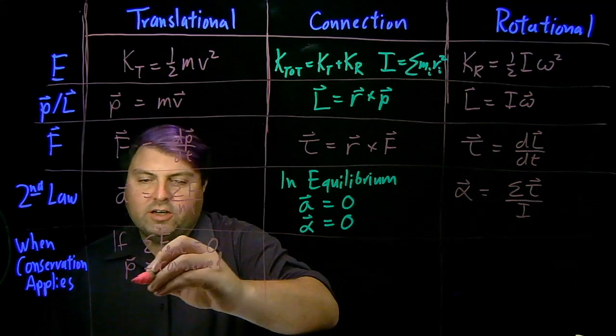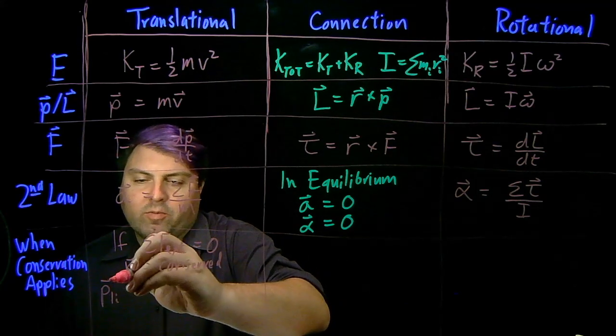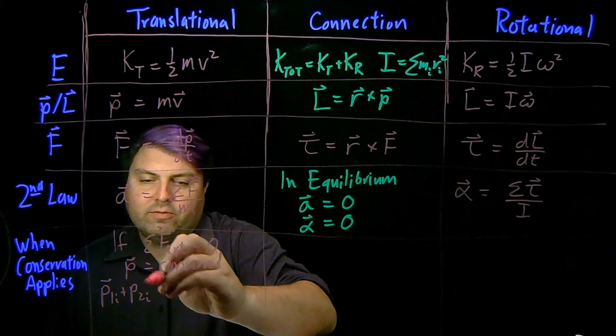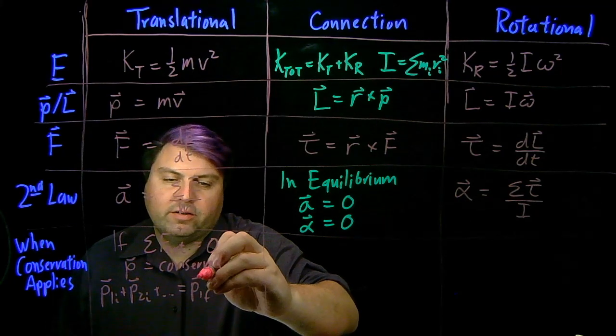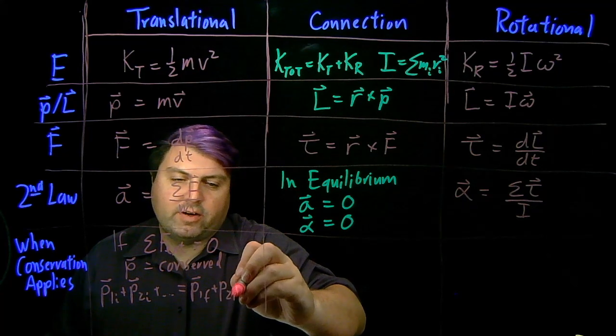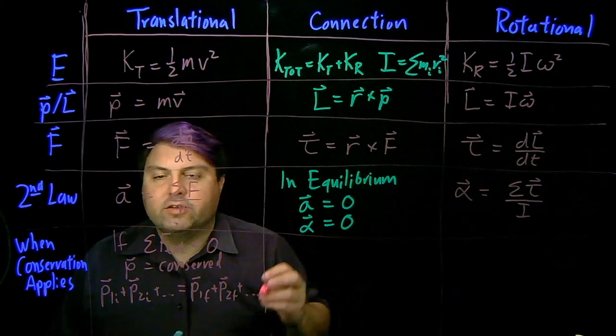then our momentum is conserved. If our momentum is conserved, then we can say momentum one initial plus momentum two initial, so on and so forth, is equal to momentum one final, plus momentum two final, and so on and so forth.